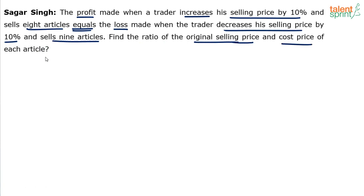Let's assume the original selling price is S and the original cost price is C. He is asking us to find out S is to C — what is the ratio of original selling price to cost price?